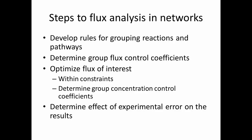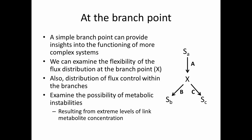After that, we can determine the effect of experimental error on our results. Back to the branch point: a branch point provides insights into the functioning of more complex systems. We can determine the flexibility of a flux distribution at the branch point. In this simple pathway, our branch point is metabolite X. We can also determine the distribution of flux control within the branches, which is a lot like the flux split ratio we discussed in metabolic flux analysis. We can also examine the possibility of metabolic instabilities resulting from extreme levels of a link metabolite — and X is the link metabolite here.